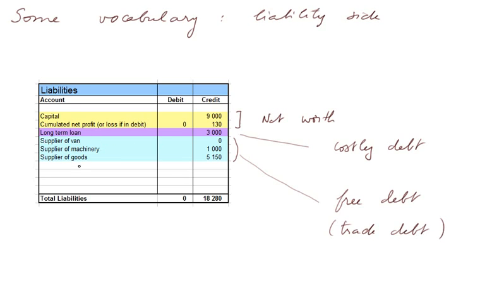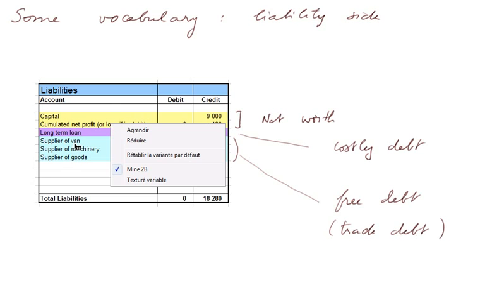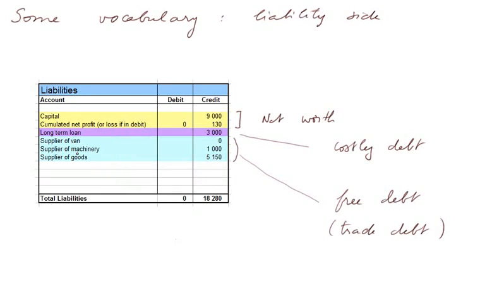Some people also call them sometimes trade debt. Because for these last three credits, you don't have to pay financial charges on them. They are free until you pay them. Whereas when you borrow money from a bank or any other lender, you have to pay interest charges every year on that. That's why these are costly and these are free.